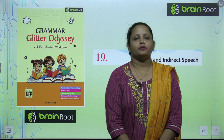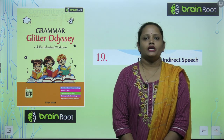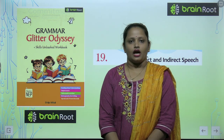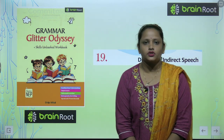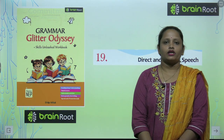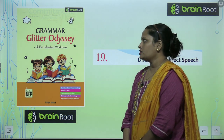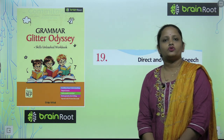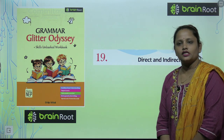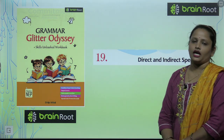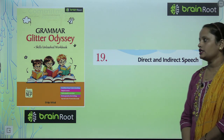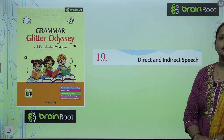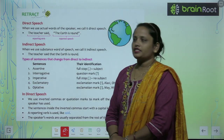Hello my dear kids, welcome back to the Brain Root series by Amit Publishing House Children. I am Vandana and we are learning English grammar of class 7. Here is a book, Grammar Glitter Odyssey. Today we are going to start with chapter number 19 and the name of the chapter is Direct and Indirect Speech.